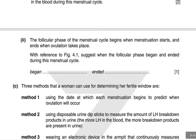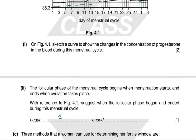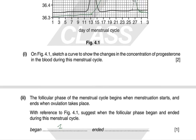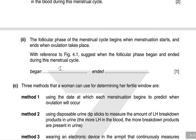The follicular phase begins when menstruation starts and ends when ovulation takes place. Looking at figure 4.1, it began at day 1 and ended when ovulation occurred, which is around day 14 — shown by the LH peak.